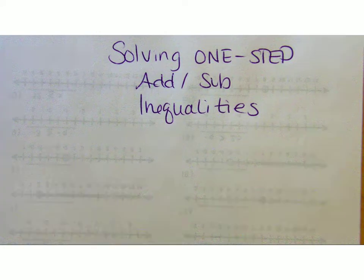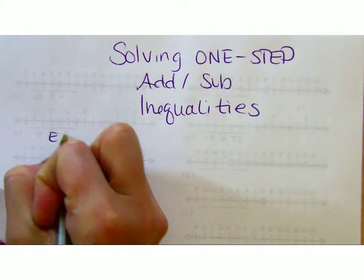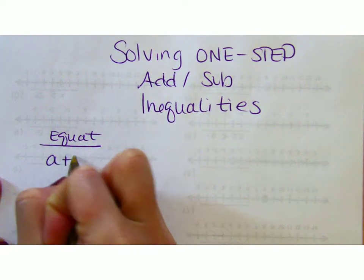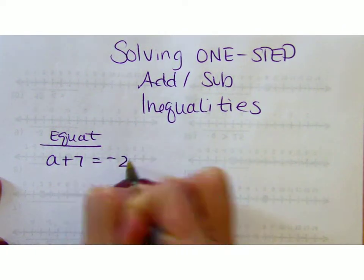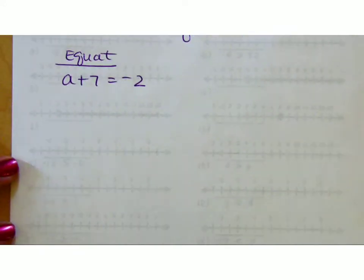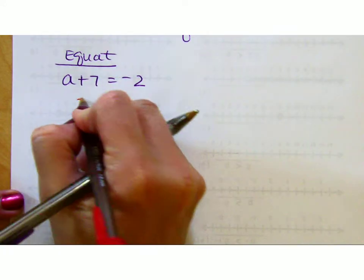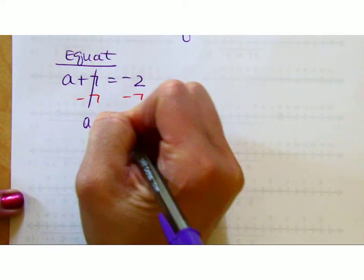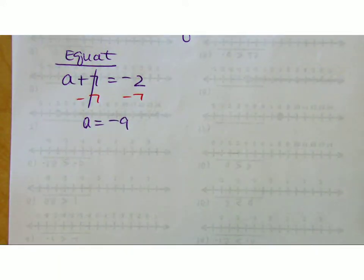We're going to apply everything we've already learned about inverse operations. If we were solving an equation, you know that I would say a plus 7 equals negative 2. You need to solve it using inverse operations. You would hopefully show your work by doing that, and you would say that a had to equal negative 9.